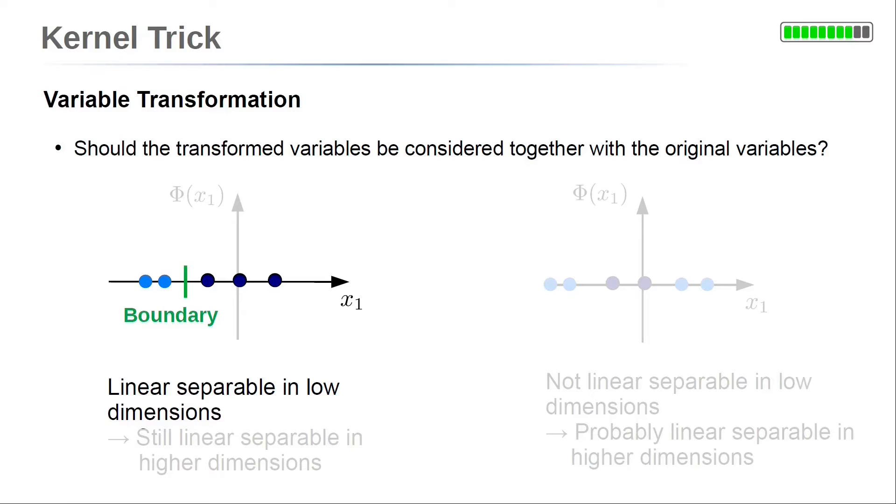You might wonder if it is beneficial to consider the original variables in addition to the transformed variables. Here we will look at a very simple example to clarify this. We consider a single independent variable x1 only. On the left side, the two classes are clearly separable by a linear boundary. Now, we apply an arbitrary variable transformation phi. This shifts the data points around. However, we still can separate the two classes by a linear boundary. The reason is, because the classes cannot mix with respect to their position to the x1 axis.